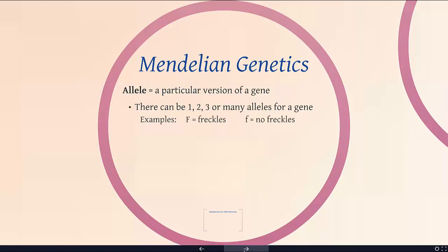I'm going to use some really simple examples here. Freckles is an example of a gene, and that gene codes for a protein that either causes your skin to get darker in clumps — freckles — or get darker or lighter in a constant fashion — no freckles. In this case, this is a gene, and we have two alleles: the version that gives you freckles, and the version that doesn't.